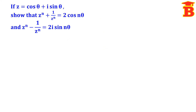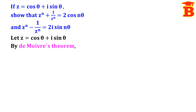Now let us see the problems. If z = cos θ + i sin θ, show that z^n + 1/z^n = 2 cos nθ and z^n − 1/z^n = 2i sin nθ. First, take z = cos θ + i sin θ. By De Moivre's Theorem, z^n = cos nθ + i sin nθ, because if we take whole power n, we can bring the n inside.